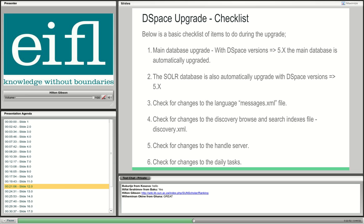Another thing to check during the upgrade is the messages XML file — for both the XMLUI and JSPUI interfaces, make sure that any custom messages are also built along with your upgrade. Also check for changes to the Discovery browse and search indexes, specifically in the Discovery XML file. Check number five: check for changes to the handle server web configuration. Check number six: check for changes to the DSpace configuration. These are changes outside the config file folder that you must check for, in addition to using Meld on the config folder.